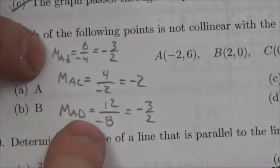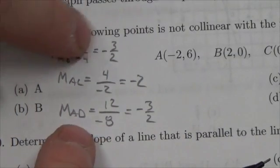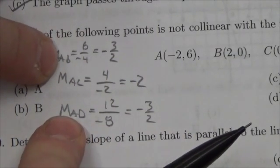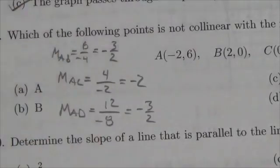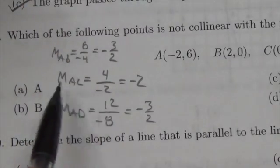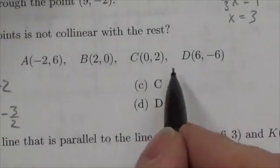Now look, the slope from A to B is the same as the slope from A to D. Because those are both linked to A, I know that A, B, and D are collinear. It's C that's out of whack, so the answer to this one is C.